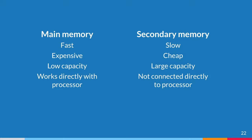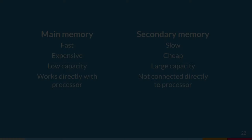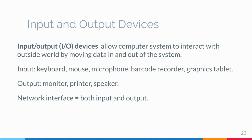So the differences between primary memory and secondary memory are in front of you. Input and output devices allow the computer system to interact with the outside world by moving data into and out of the system. An input device is used to bring data into the system. Some input devices are keyboard, mouse, microphone, barcode reader, and graphics tablet.